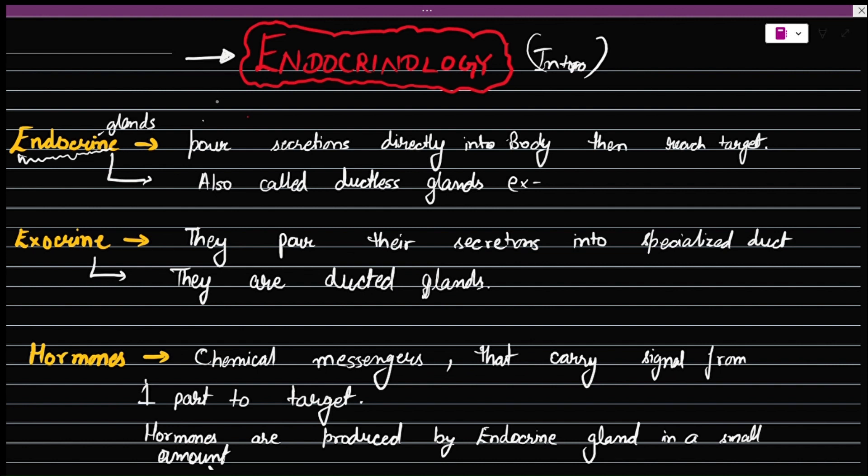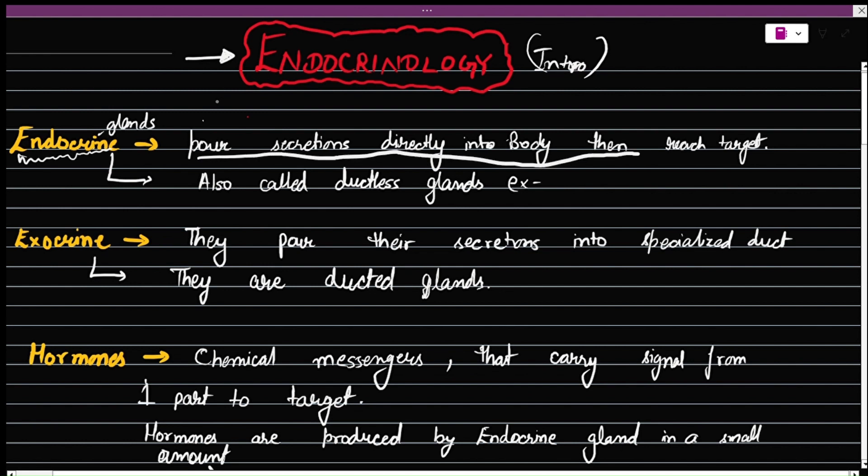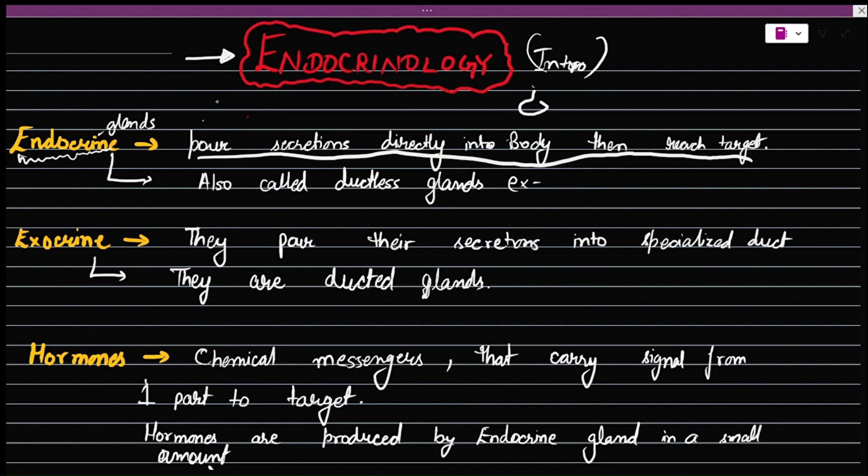What they do is they pour their secretions directly into the body, then those secretions reach the target. So there will be a gland which is an endocrine gland. It will secrete some secretions into blood, and from this blood it will go to its target cell. That's how it will reach the target and transmit its signal from source to target via blood.